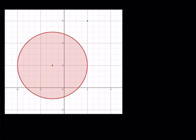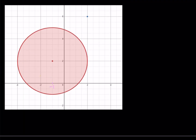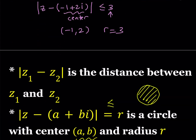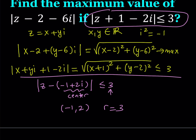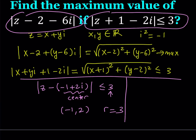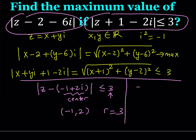We have a circle centered at (negative 1, 2) with radius 3, including the inside. Now, the expression |z minus 2 minus 6i| represents the distance between z and the point 2 plus 6i. So here's our point 2 comma 6, which can be written as 2 plus 6i, and we want to maximize the distance between this fixed point and any point inside or on the circle.